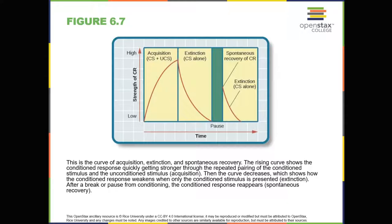In classical conditioning, the initial period of learning is known as acquisition — when an organism learns to connect a neutral stimulus and an unconditioned stimulus. During acquisition, the neutral stimulus begins to elicit the conditioned response and eventually becomes a conditioned stimulus capable of eliciting the conditioned response by itself. Timing is important: typically there should be only a brief interval between the conditioned stimulus and the unconditioned stimulus — sometimes as little as five seconds, though with other types of conditioning it can be up to several hours.